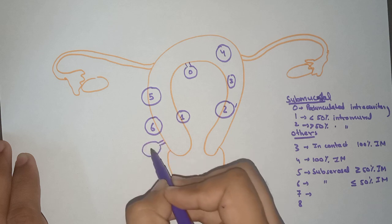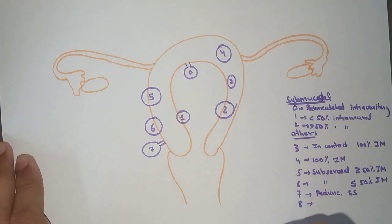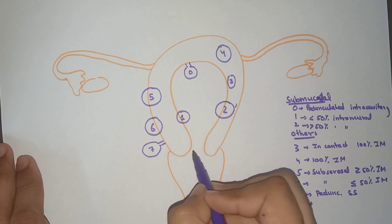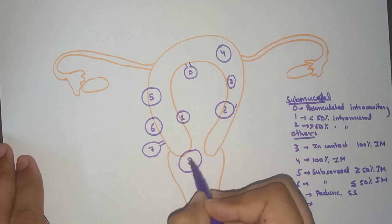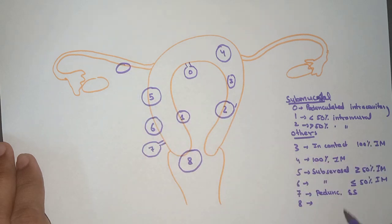Now coming to Type 8. Type 8 is an important type. This is when we have a fibroid beyond this position or somewhere else, like in the round ligament or another position. It is also known as 'other specified.'